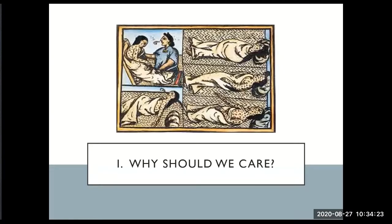We're going to be talking today about the Columbian Exchange, about the first interactions between Europeans and the people of the Americas. The main point to take away from today's lecture is that European contact was a demographic disaster for Native Americans, largely due to biological reasons — viruses and bacteria were the first to colonize and wiped out a lot of the Native Americans.